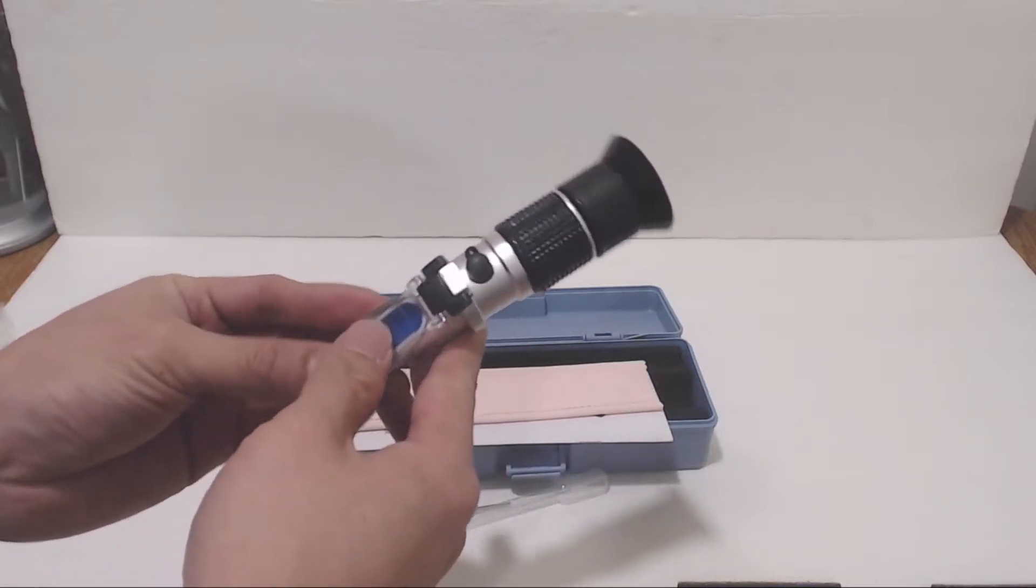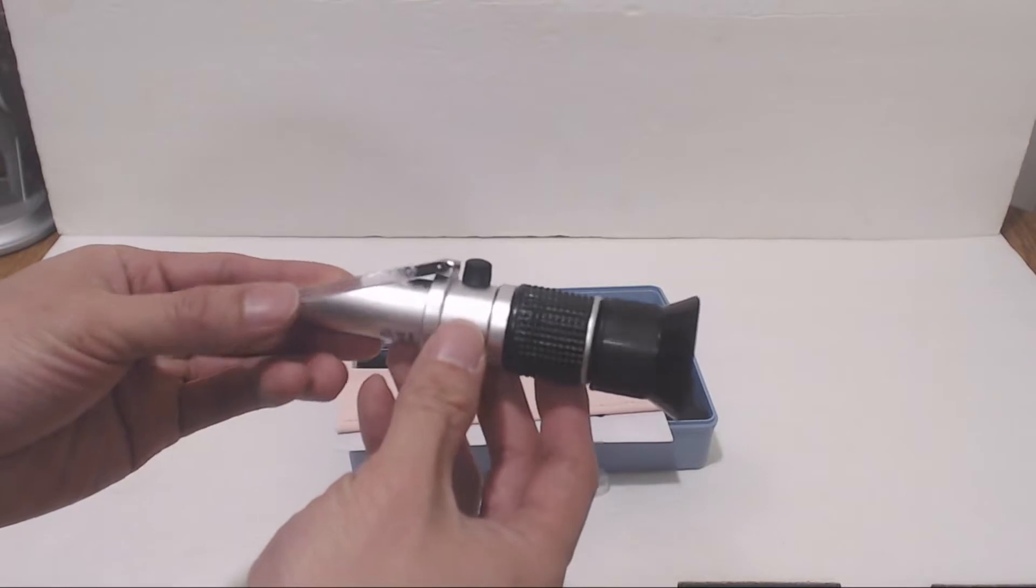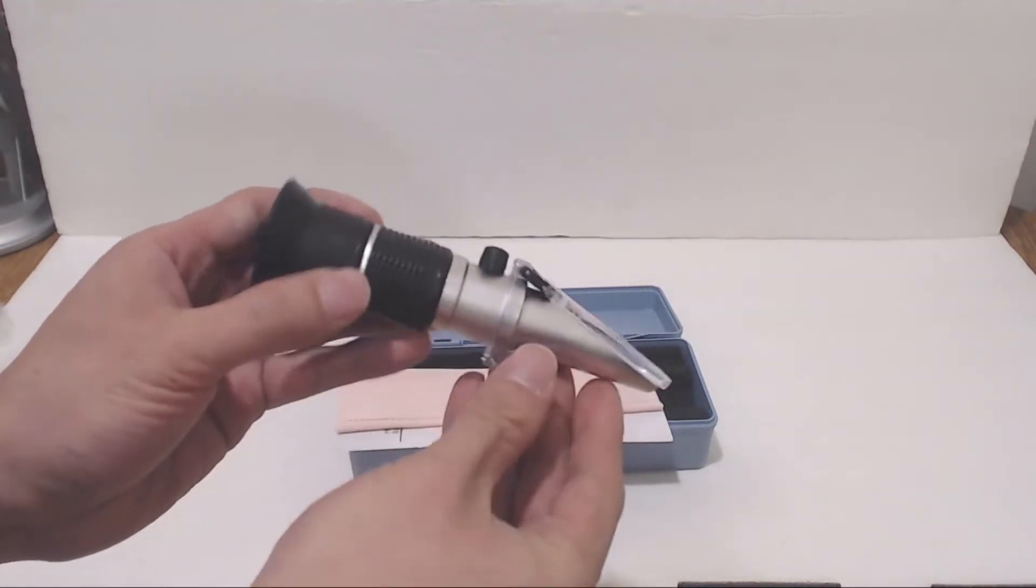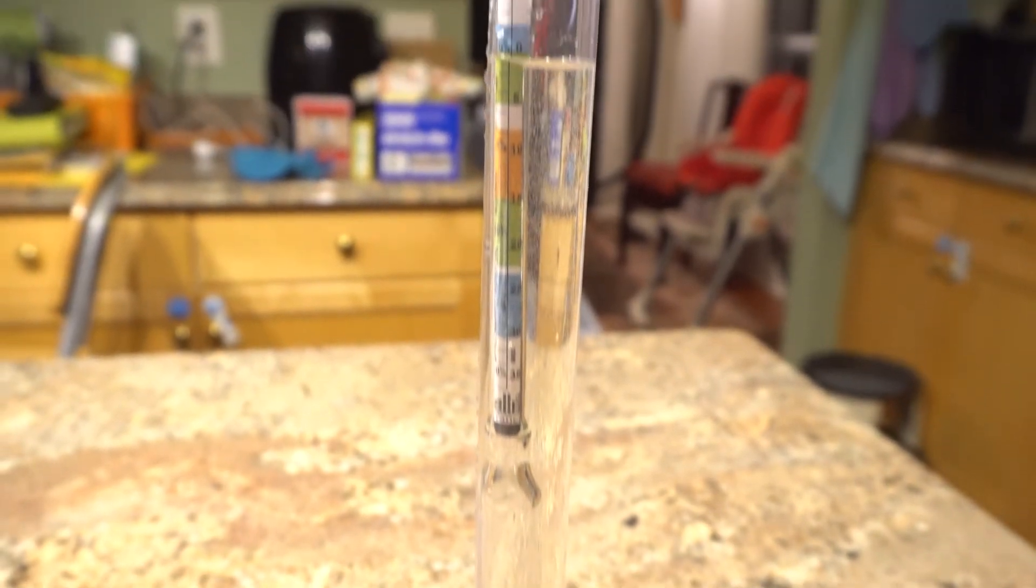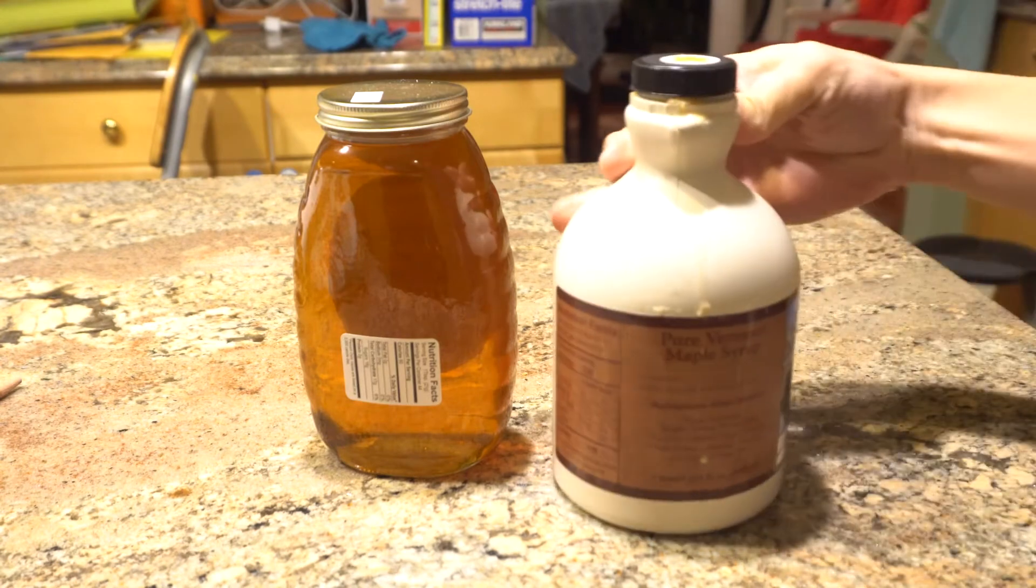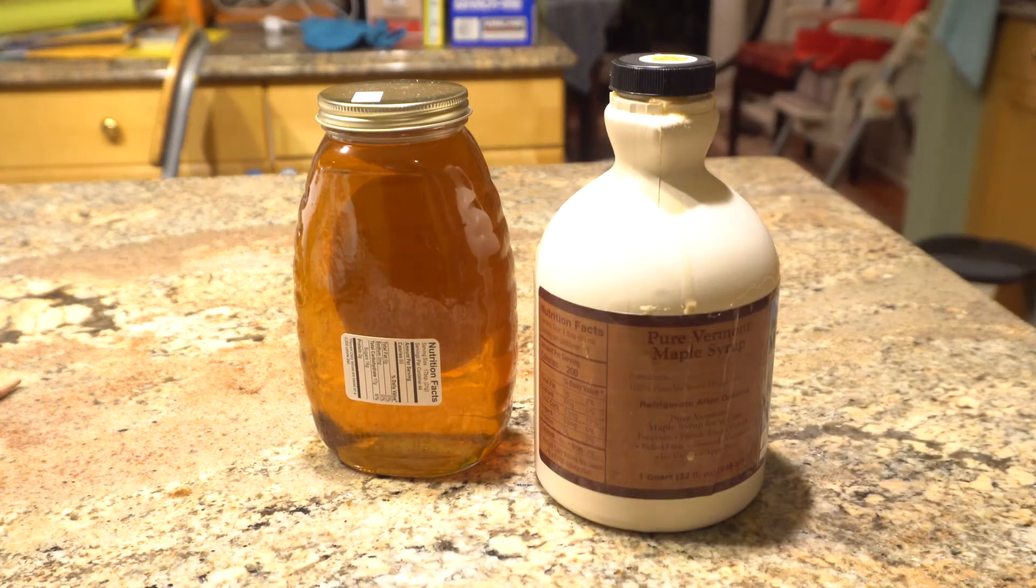This tool is commonly used in wine and beer making to measure sugar content before and after brewing in order to determine alcohol content after fermentation. This takes the place of a hydrometer, which measures specific gravity. With this high-scale refractometer, you can also measure the sugar content of products like honey and syrup.